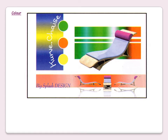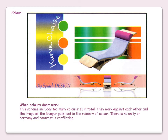This is the first layout. This is the sort of thing that we get from pupils when they haven't done any work on color theory or layout. When colors don't work: this scheme includes too many colors — 11 in total. They work against each other and the image of the lounger gets lost in the rainbow of colors. There is no unity or harmony and the contrast is conflicting. This is just somebody who doesn't have a clue about color and has thrown everything at the page.